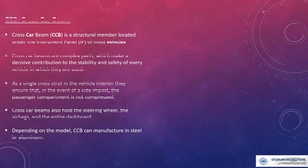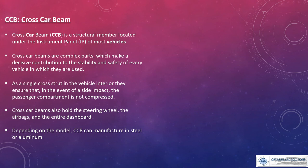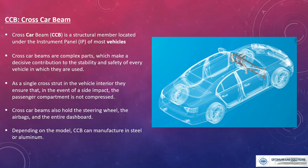As mentioned previously, the term CCB came up. So what is the CCB? The cross car beam is a structural part — not a trim part — but it is most important for mounting and supporting the dashboard, instrument panel, cockpit, floor console, etc. The cross car beam is a structural member located under the instrument panel in most vehicles. The CCB is a complex part which makes an important contribution to building a stable and safe vehicle. As a single cross structure in the vehicle interior, it ensures that in the event of a frontal impact, the passenger compartment is not compressed. The CCB also holds the steering wheel, airbags, and the entire dashboard. Depending upon the model, the CCB can be manufactured in steel or iron.